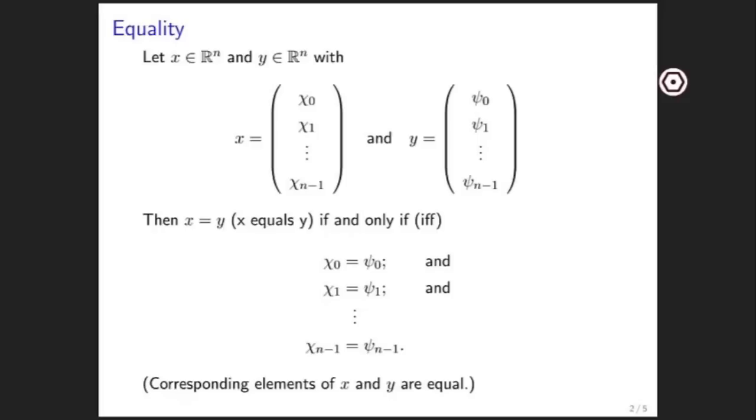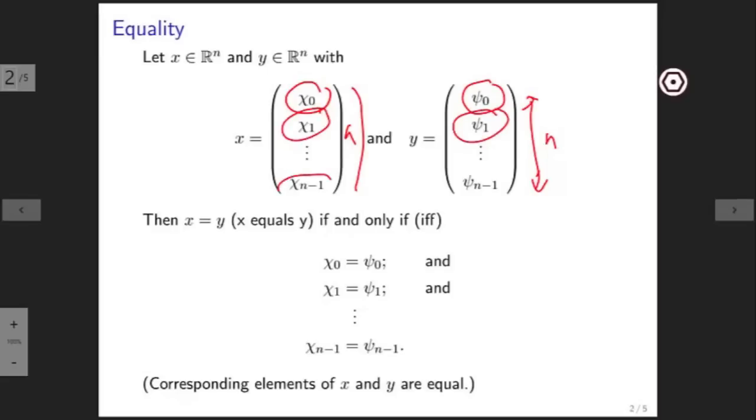So if we have two vectors x and y of size n, and we expose the components of each of these vectors, then the component of x indexed with 0, chi sub 0, must equal psi sub 0, the component of y indexed with 0. Similarly, chi 1 must be equal to psi 1 and so forth.